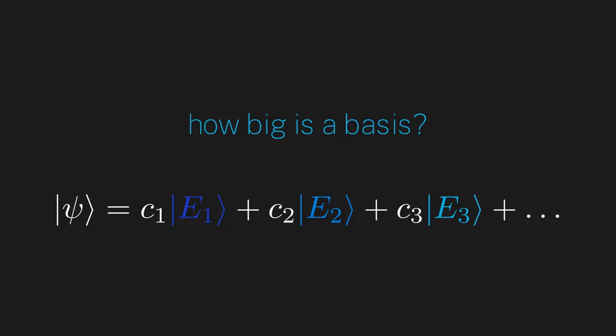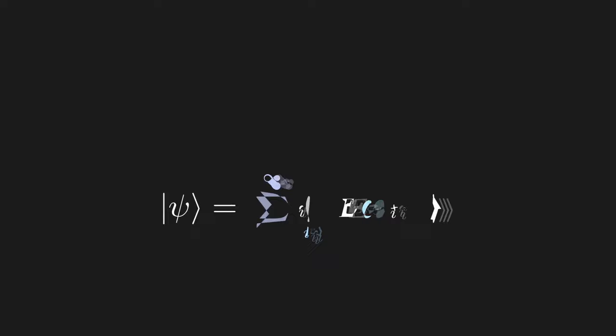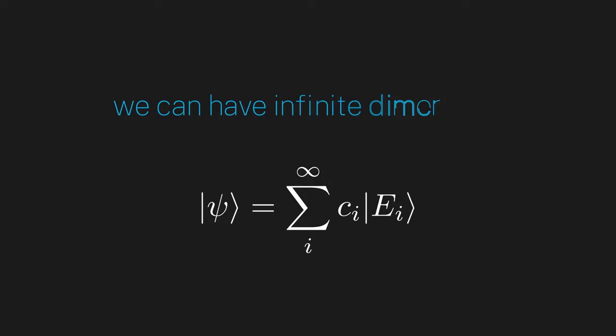For a clue, we can remember that it is possible for a quantum state to be in an infinite linear combination of outcome states. We haven't proven that this list of outcome states forms a basis, but let's assume that they do. We'll prove this in a later episode. This means that we can have infinitely many vectors in our basis, and therefore, our vector space can have infinite dimension.